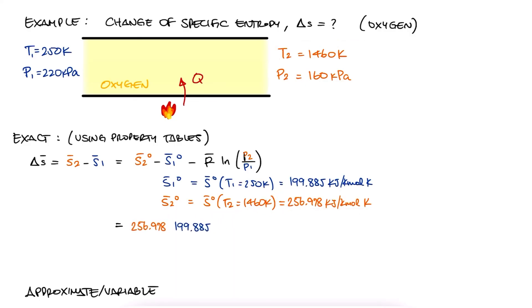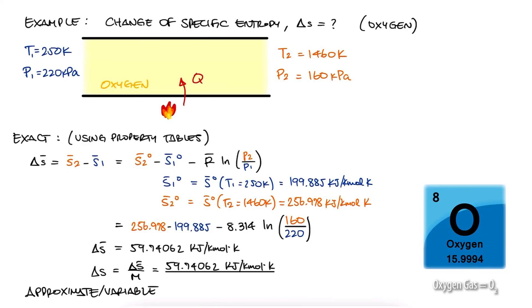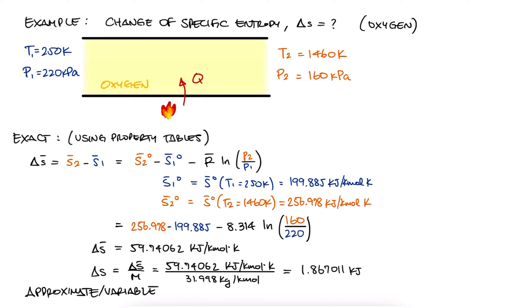We substitute those two values, the value for the universal gas constant R bar and the two pressure values and find the change in molar specific entropy. We divide this by the molar mass of oxygen and get the change in specific entropy in kilojoules per kilogram kelvin. And that's it.